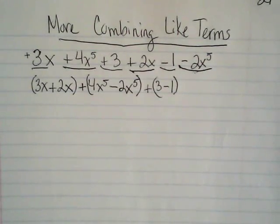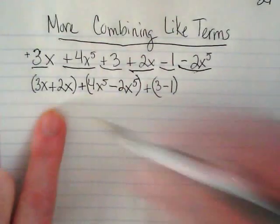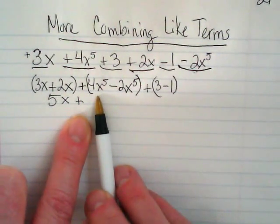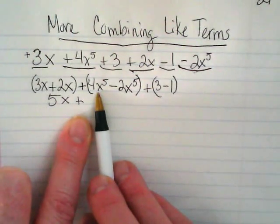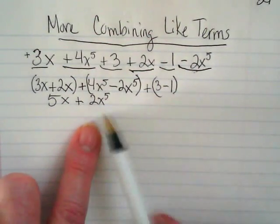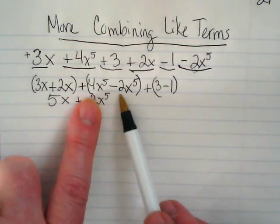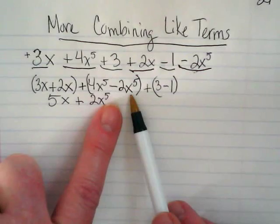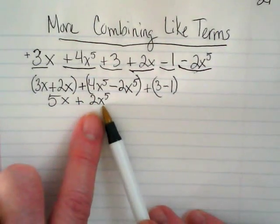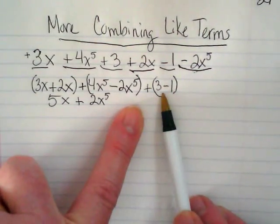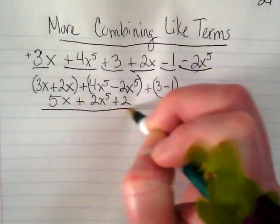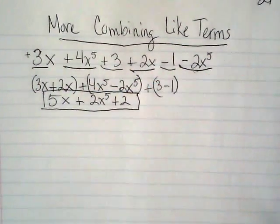A plus means 'and,' so we have these terms and these terms and these terms — our answer is going to have three terms because we're combining each group. He took the four and the two and subtracted them. The x to the fifth is like its last name — we just combine the coefficients: four minus two is two, and it keeps its last name. The last term keeps its plus sign. That answer is all positive, and that's as simplified as we can get it.